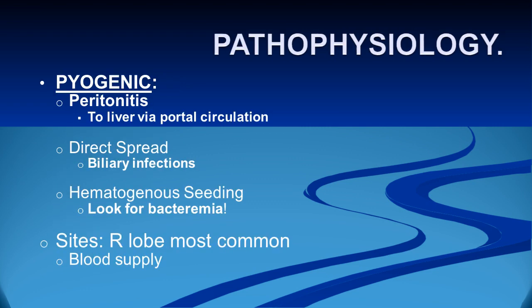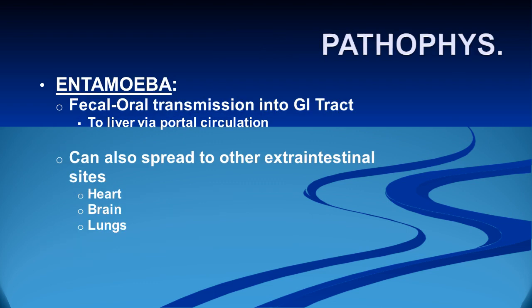Pyogenic patients can have infection spreading via peritonitis, portal circulation, direct biliary spread, or hematogenous spread. Look for bacteremia; the right lobe is most common due to blood supply and drainage. Amoebic abscess spreads via feco-oral transmission to the GI tract and then to the liver via portal circulation, and can also spread to extra-intestinal sites like the heart, brain, and lungs.